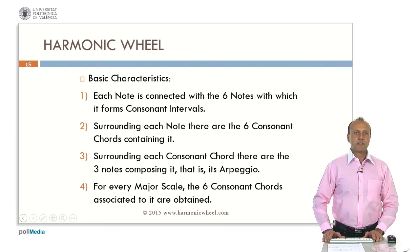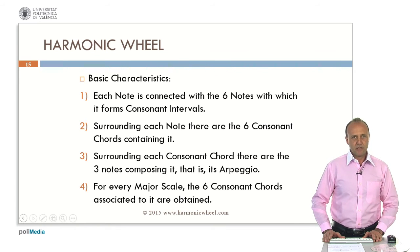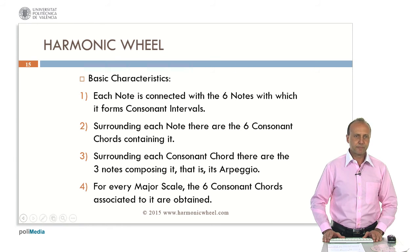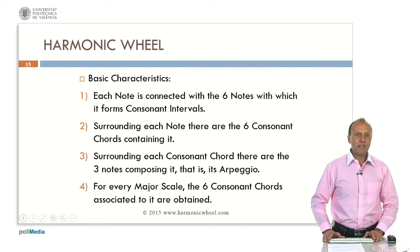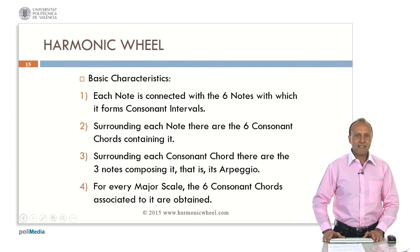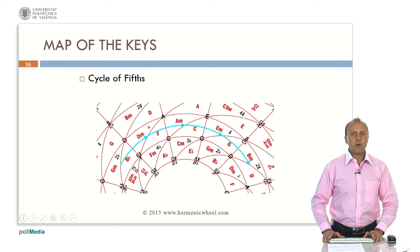So, the basic characteristics of the harmonic wheel are: each note is connected with the six notes with which it forms consonant intervals. Surrounding each note, there are the six consonant chords containing it. Surrounding each consonant chord, there are the three notes composing it, that is, its arpeggio. And for every major scale, we obtain the six consonant chords associated to it.